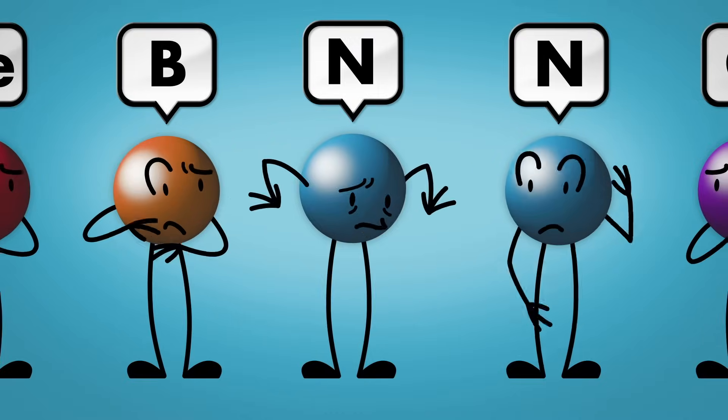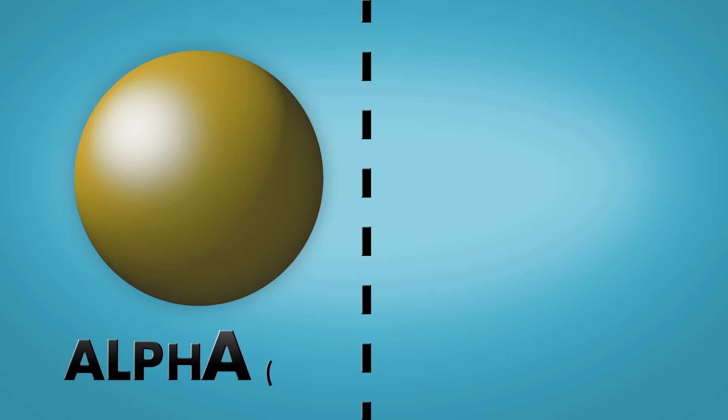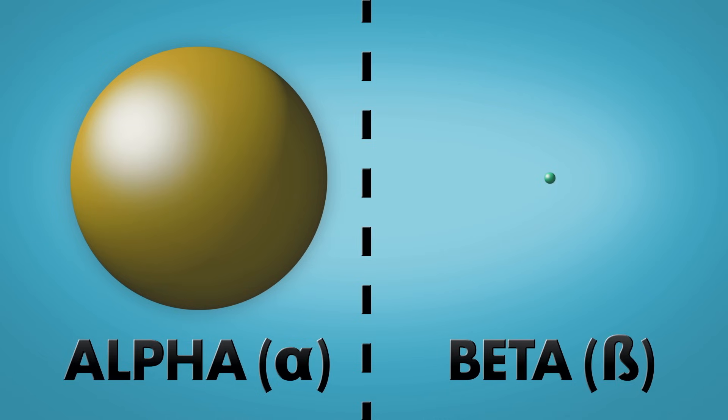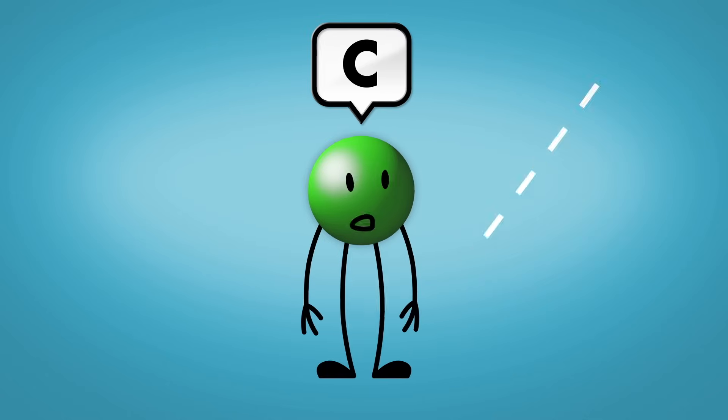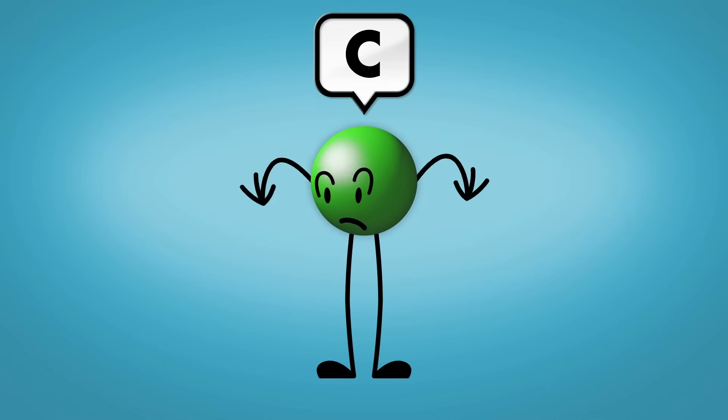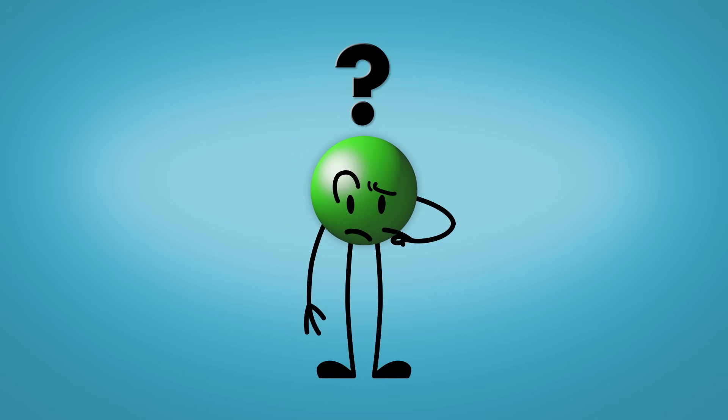There are two different particles that can be emitted from radioactive nuclei, though never together. The very fast electron is known as a beta particle. If you know a little bit about electrons, you may be thinking, what was the electron doing in the nucleus in the first place?